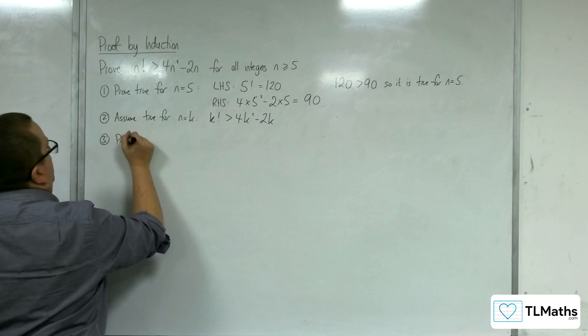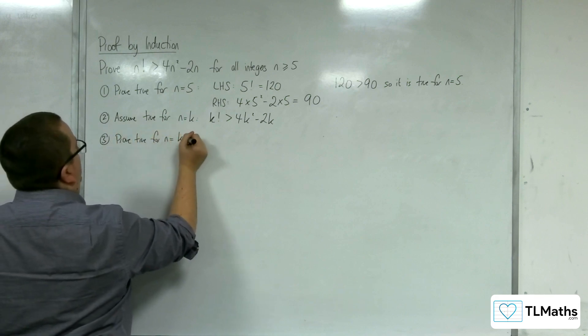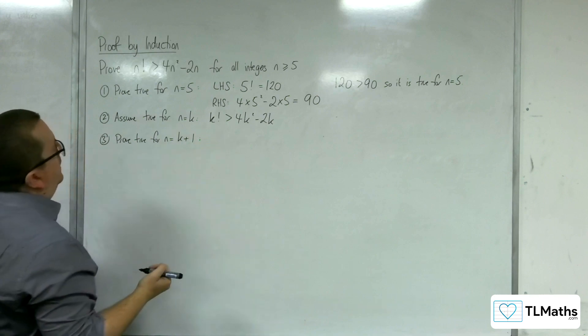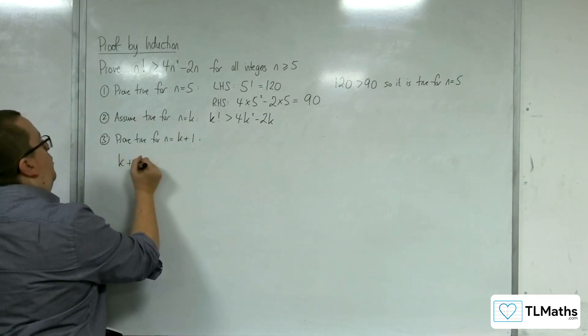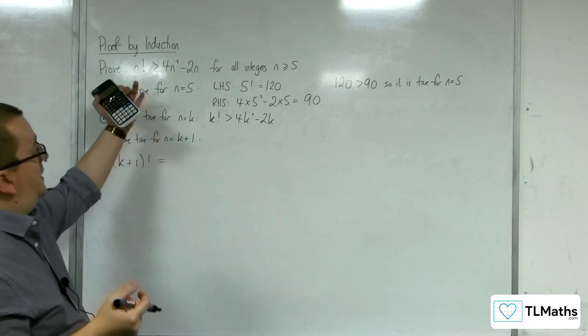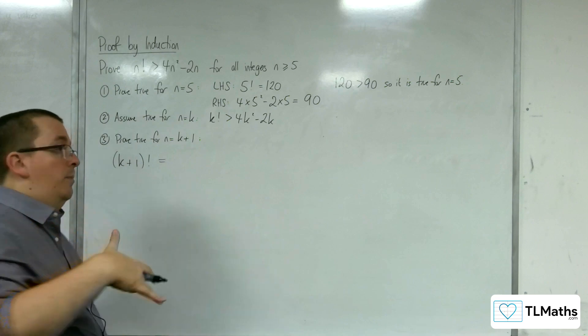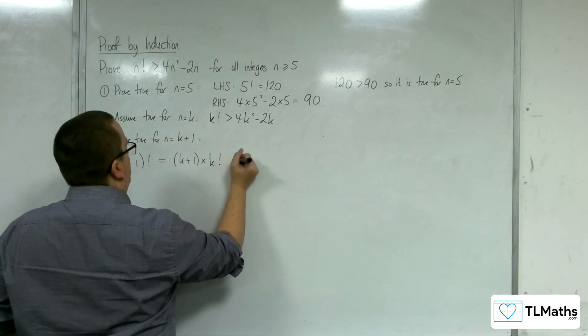Step 3, prove that it's true for n equals k plus 1. So we're going to replace the n with k plus 1, so we get k plus 1 factorial on the left hand side. OK, so k plus 1 factorial we understand to be k plus 1 times by k factorial.